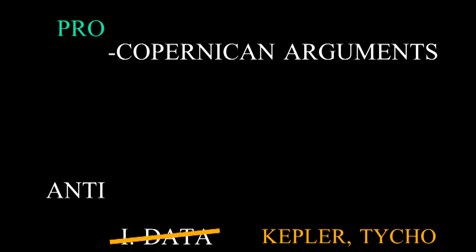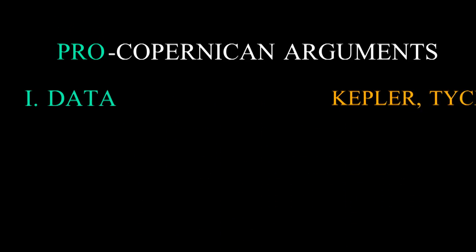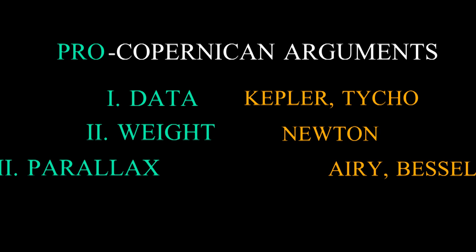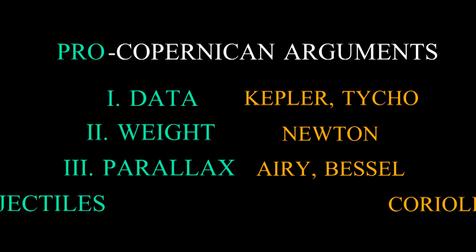The Copernican model worked great once Kepler realized that the planets move in ellipses. Ellipses fit perfectly into Newton's laws of motion. And the Copernican theory was further confirmed by observing parallax and the Coriolis effect.